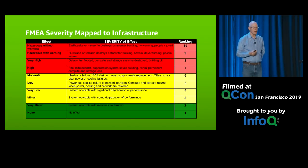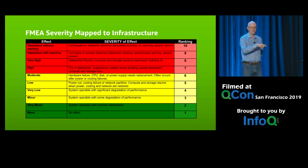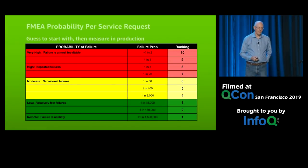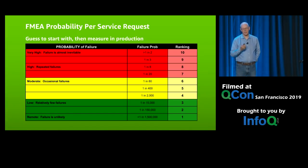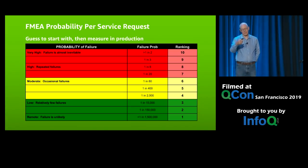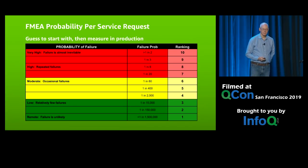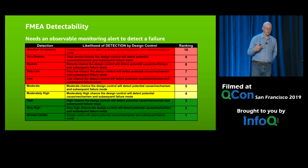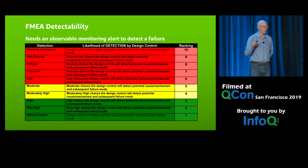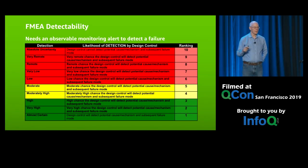Then there are standard probability rankings — an exponential idea of how likely something is to happen. The idea is to be relative, not very accurate. And then likelihood — detectability: how well you can detect something. If you have no way of measuring it, give it a high ranking for unlikely to detect. If you've got really good monitoring, observability, and alerts set up, and people pay attention to the alerts, you'll be down at the bottom. Don't get too hung up on picking the exact number — it's just trying to get a relative ranking.